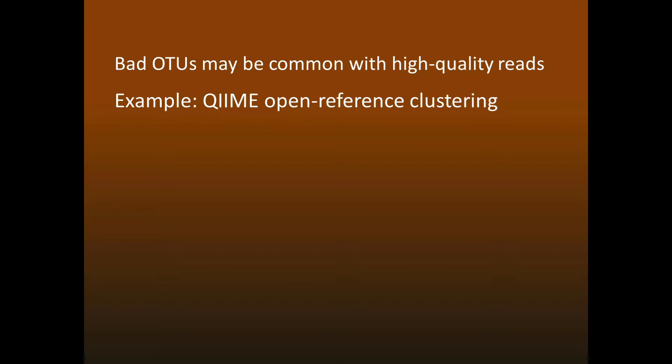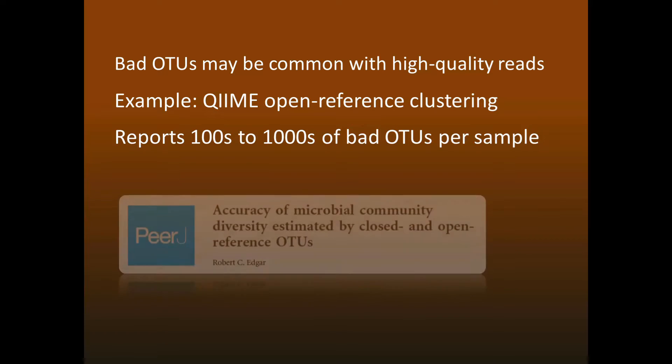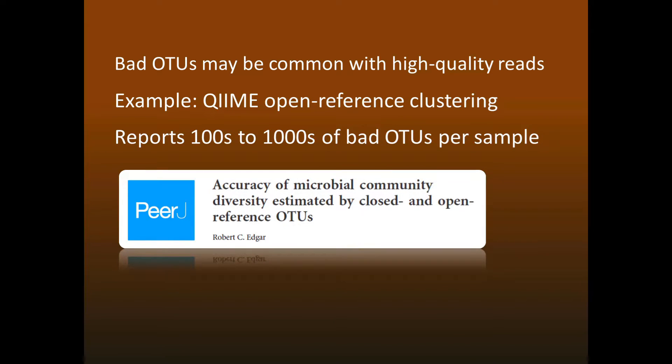Some well-known software packages have problems with this. For example, for several years the recommended OTU method in QIIME was called Open Reference Clustering. This method generates hundreds or thousands of bad OTUs on mock community tests, and probably on real samples also. You can read more about this in my PeerJ paper shown here.